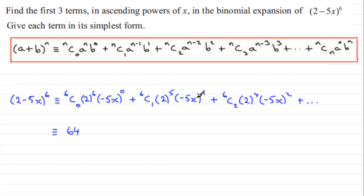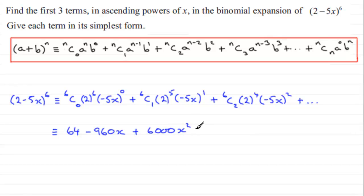6 times 2 to the power 5 times (minus 5x) gives a negative number: minus 960x. The next term is positive because we've got (minus 5x) all squared. 6C2 gives 15, and you've got 15 times 2 to the power 4 (which is 16) times 25x squared, which comes to 6000x squared. Then we've got plus and so on. So we've expanded it to the first three terms — some people say 'expand up to the term in x squared', which is the same thing. Each term is in its simplest form, and I hope that's given you some idea on that one.